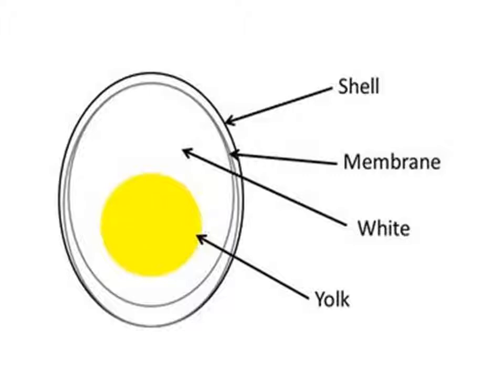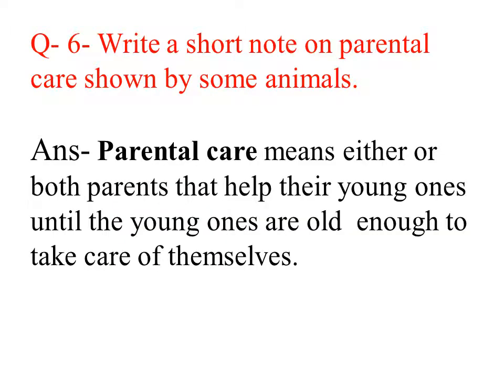Here is the diagram for question number 5. You have to label: egg shell, then the second part — egg white, and the third part — egg yolk. No need to write the membrane. You have to draw this diagram in your copy after the answer of question number 5, then start to write question number 6.